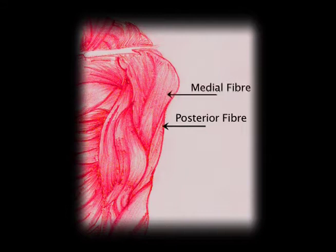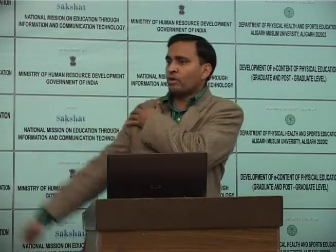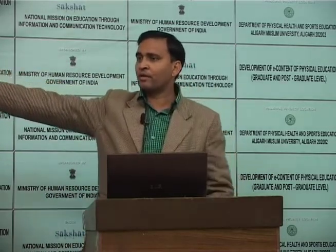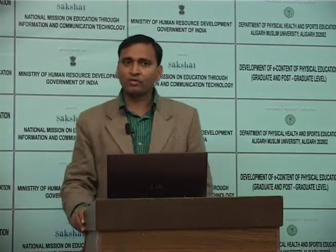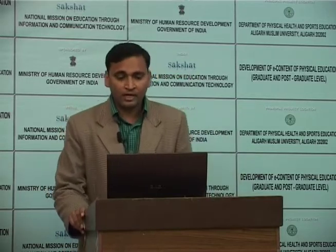The 0 to 90 degree abduction of the arm is the function of the deltoid muscle. The deltoid has three fiber groups: anterior fiber, middle fiber, and posterior fiber. Different fibers are responsible for different types of movement. Shoulder flexion is performed by the anterior fiber of the deltoid. Full shoulder abduction is the function of the middle fiber of the deltoid. Shoulder extension is the function of the posterior fiber of the deltoid.